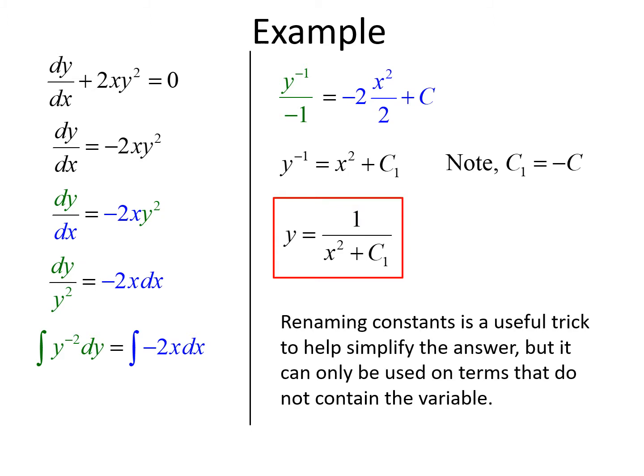When we rename constants, it's a useful trick to help simplify the answer. But you can only do that on terms that do not contain the variable. So when we multiplied negative 1 times negative x squared, we couldn't just call that c because there's an x in there. We can only rename something as a constant if we're truly dealing with constants and not variables.